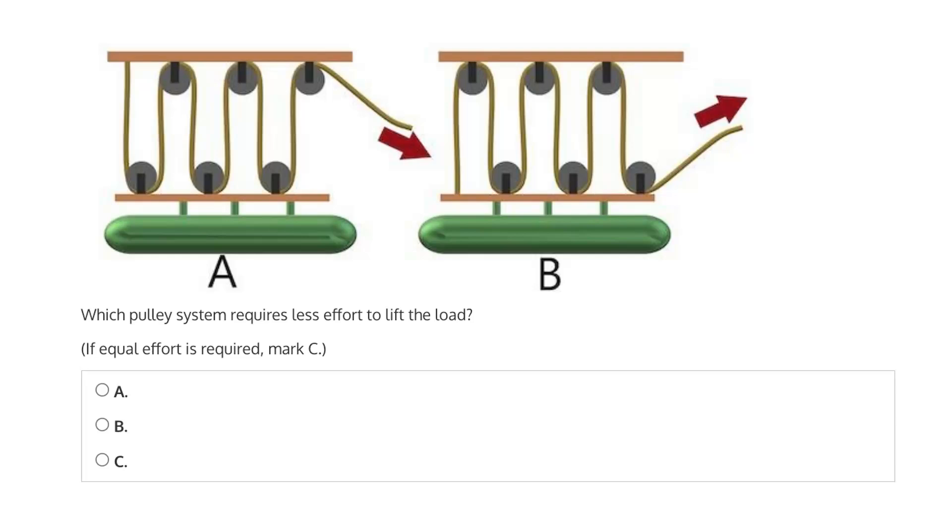So, really the main difference between A and B is the number of ropes that are used to lift the load. The larger the number of ropes, the easier the effort, because that load, or the weight of that load, will be split across more ropes.